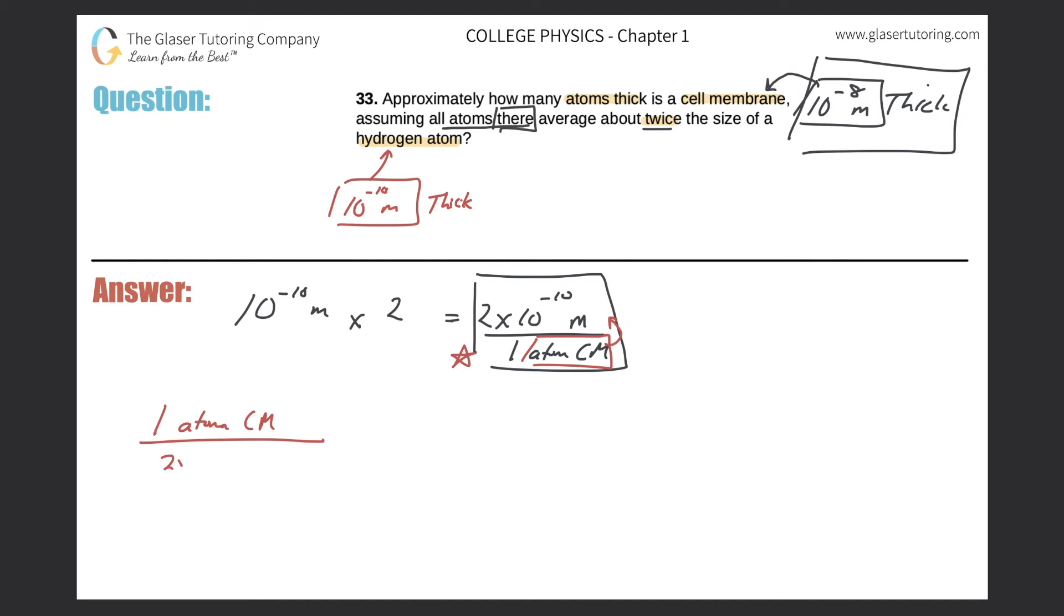it measures 2 times 10 to the negative 10 meters. Now if I take this value and multiply it by the average thickness of the cell membrane, 10 raised to the negative 8 meters, notice how the meters will cancel, leaving me with the unit of atoms in the cell membrane. That's going to be my unit here, atoms of the cell membrane.